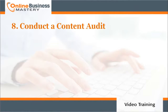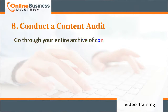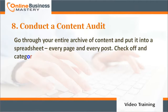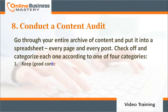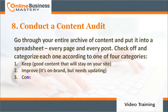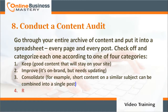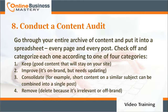Number eight: conduct a content audit. Go through your entire archive of content and put it into a spreadsheet — every page and every post. Categorize each one according to one of four categories: number one, keep (good content that will stay on your site); number two, improve (it's on brand but needs updating); number three, consolidate (short content on a similar subject can be combined into a single post); number four, remove (delete because it's irrelevant or off-brand).